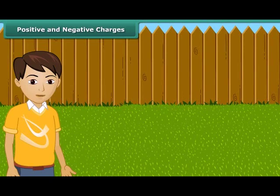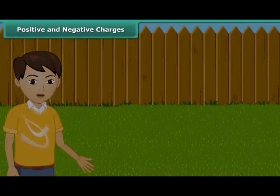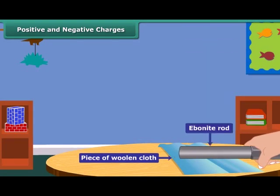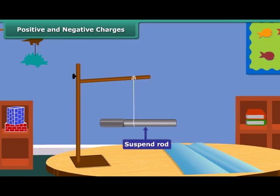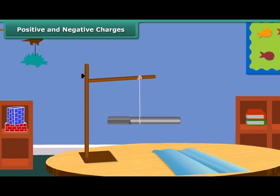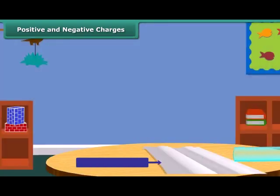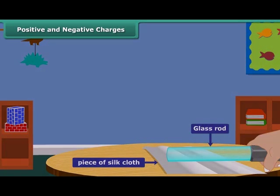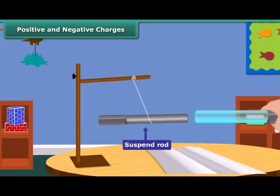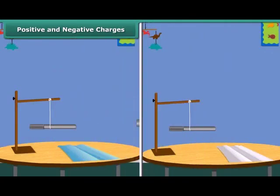Let us perform an activity to understand positive and negative charges. Take an ebonite rod and rub it with a piece of woolen cloth. Now suspend the rod by tying a thread through its middle. Now charge another ebonite rod in the same way and bring it close to the suspended rod. What do you notice? The suspended rod moves away from the second one. Now take a glass rod and rub it with a silk cloth. Bring this glass rod close to the charged suspended ebonite rod.